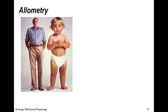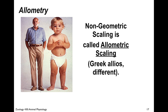Allometry is when lengths don't change equally — non-geometric scaling is called allometric scaling. For example, if adults were just blown-up versions of babies, you can imagine how enormous your head would be relative to your body. Babies do have huge heads for their body size, but as we age and get larger, our heads become relatively smaller. That's allometry.